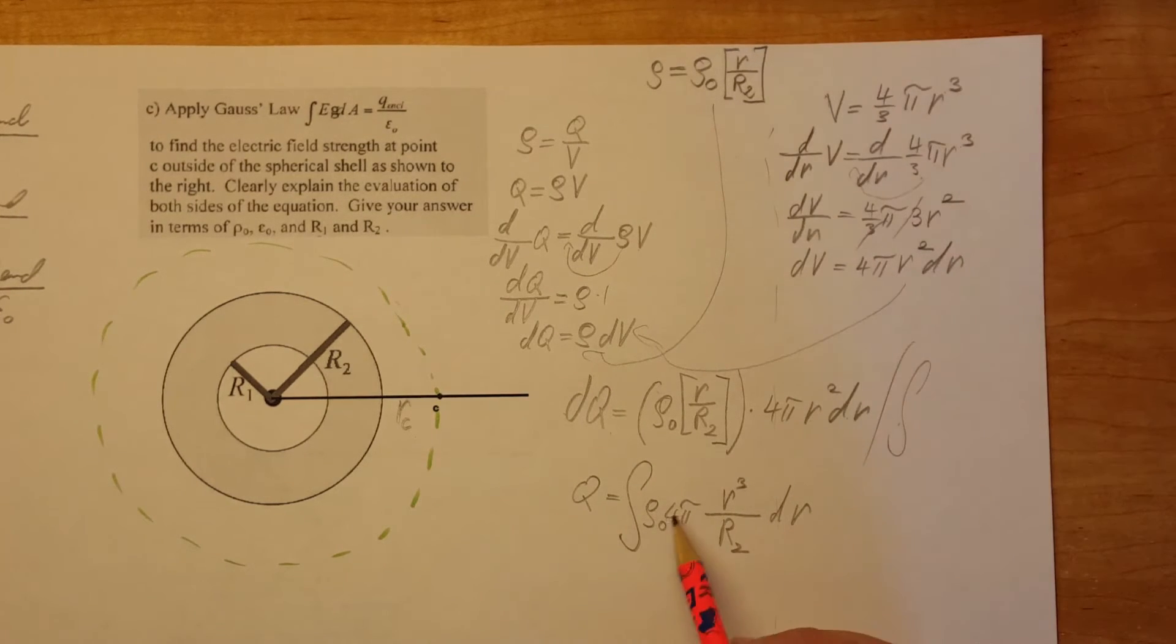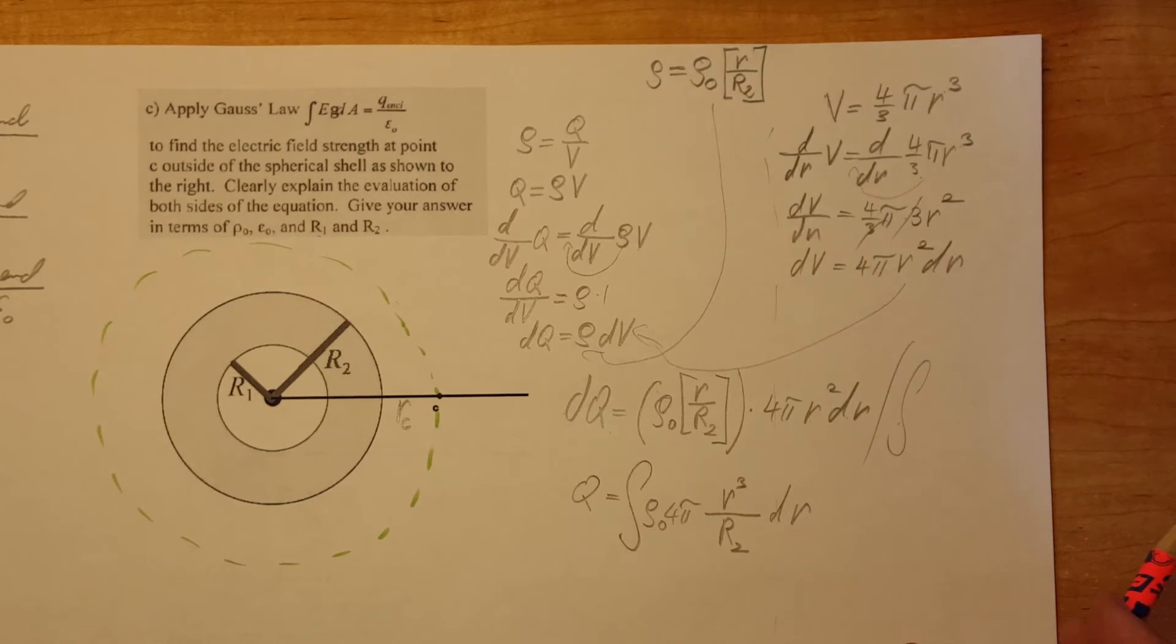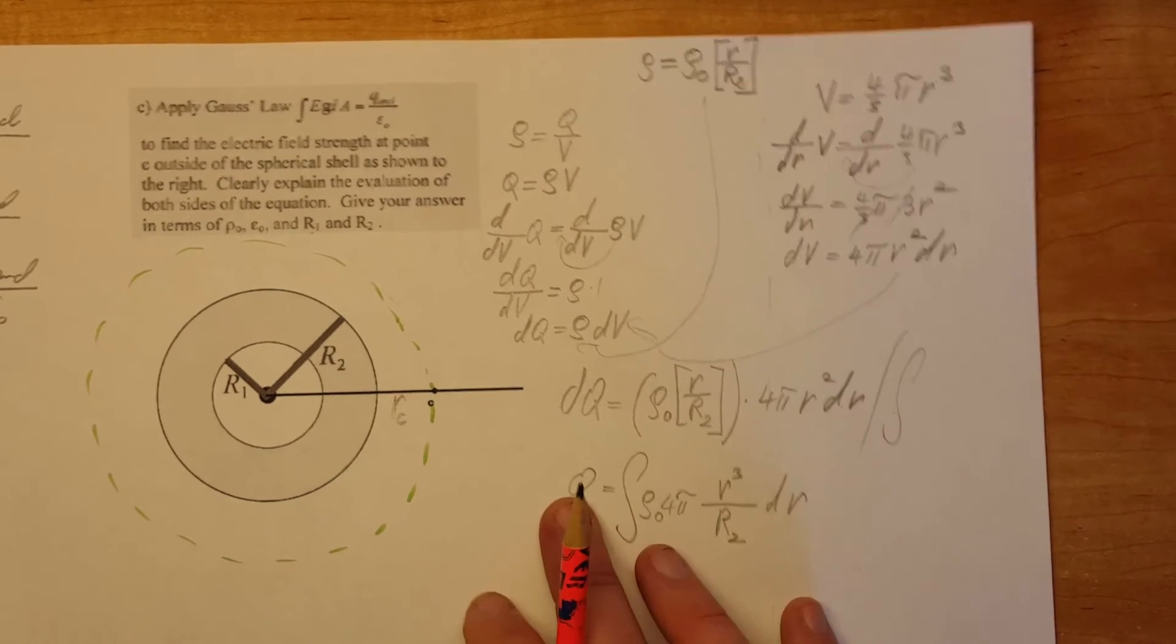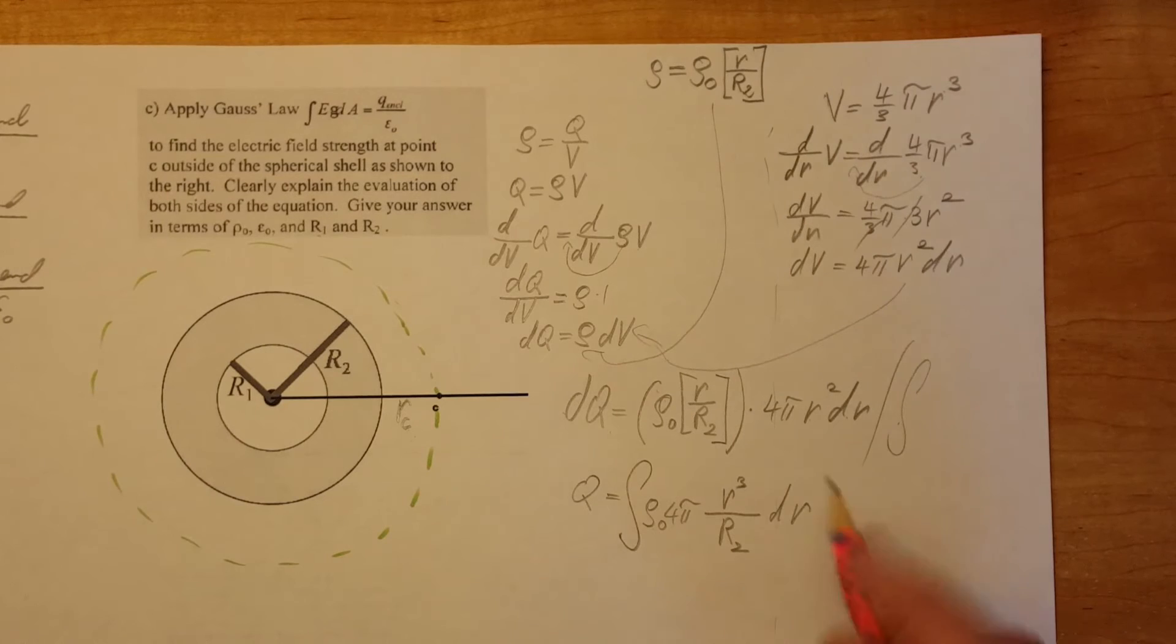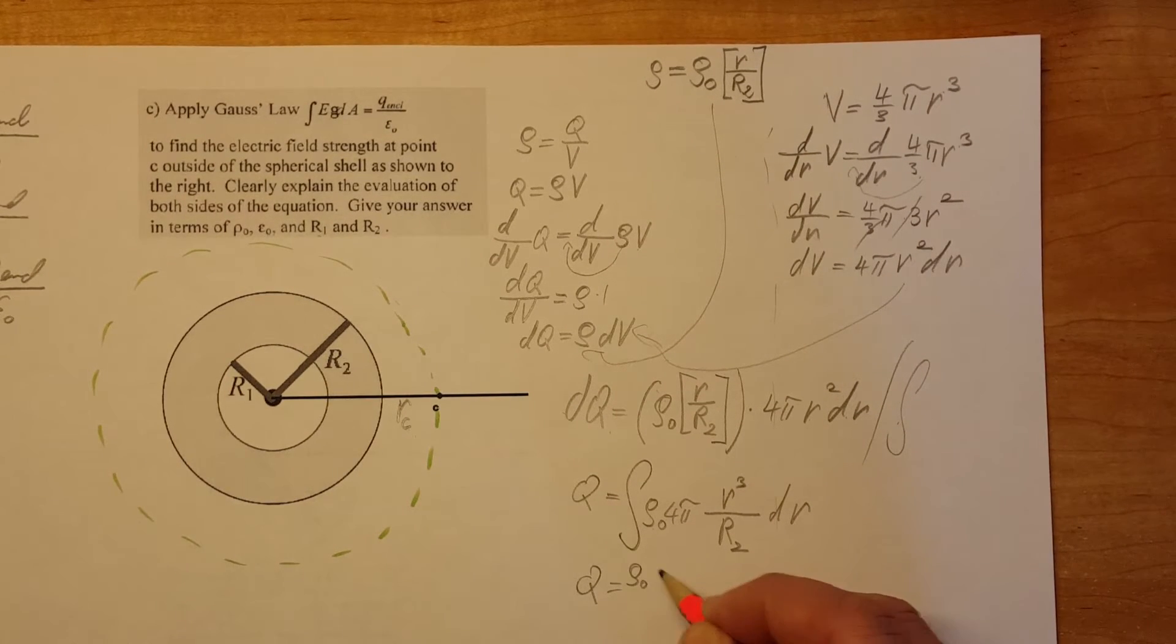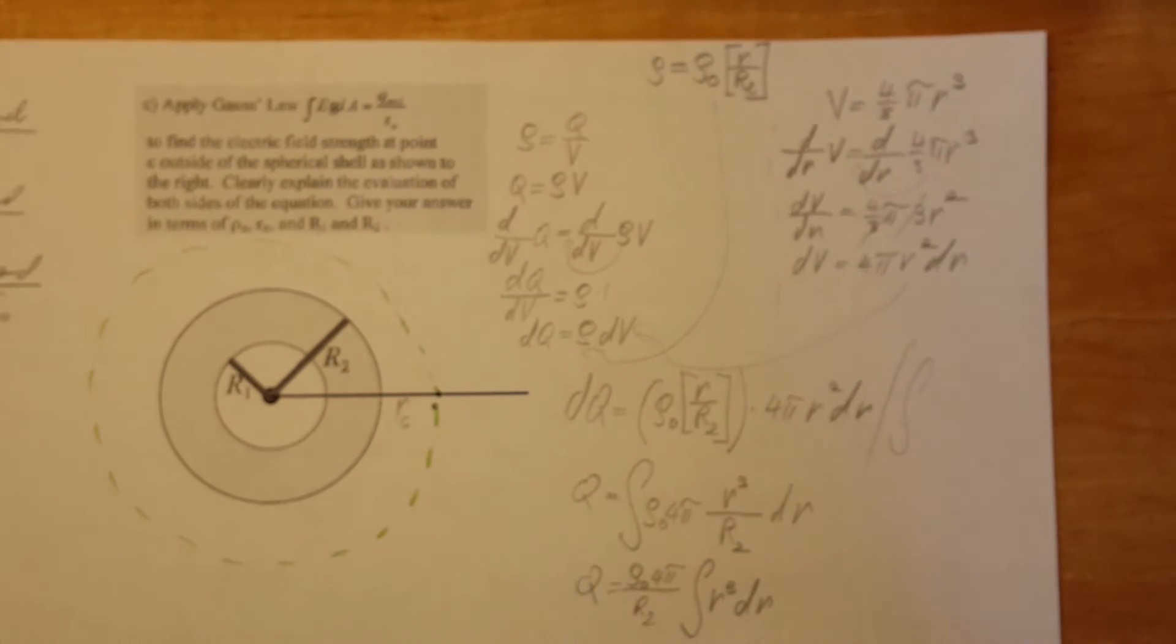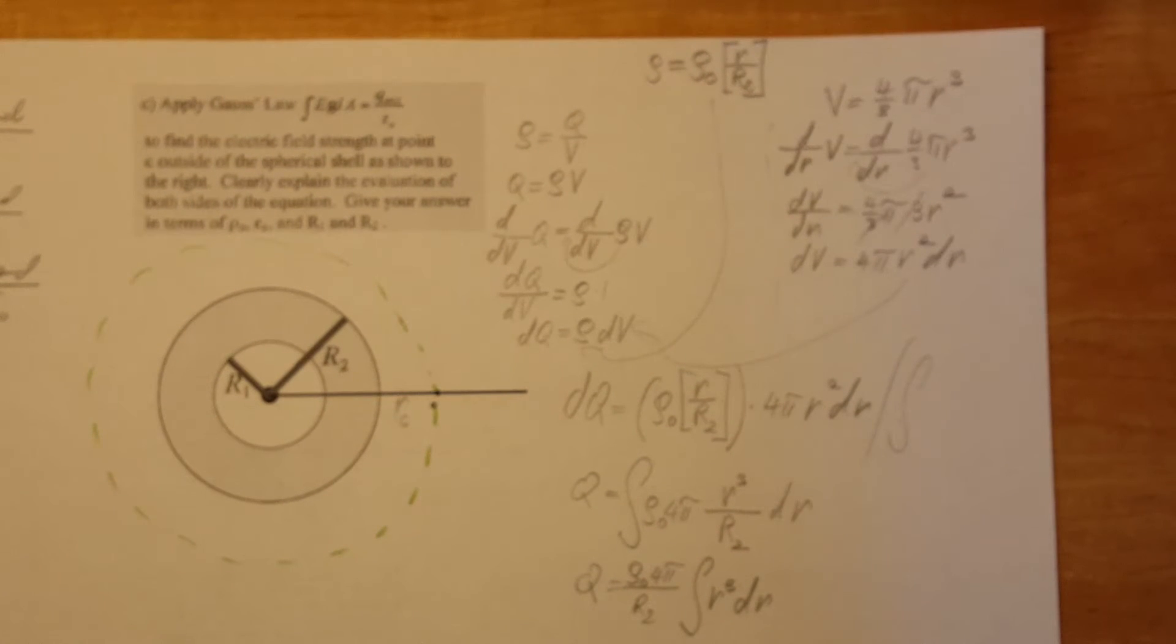Now let's look at what we have: Rho 0, 4 pi and the big R2. These are all constants. So we're going to be able to move them in front of the integral. Rho 0, 4 pi over R2 integral. All we have left is inside is R cubed which will be a pretty easy integral. At first it might look very scary but all this moves out and all we have is R cubed.